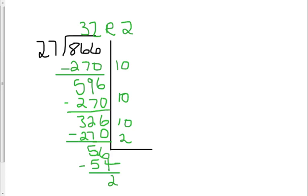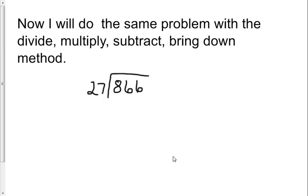Now I'm going to do the more traditional method, same problem with the divide, multiply, subtract, and bring down method. How many 27s are in 8? There are none. How many 27s in 86? Well, if I were thinking estimate, if this were 30 and this were 90, there would be 3. So 3 is the number I want to try. I have to be careful where I place it. 3 times 7 is 21. 3 times 2 is 6, plus 2 is 8. So I've divided, multiplied 3 times 27, subtract, and now I'm ready to bring down my next number.